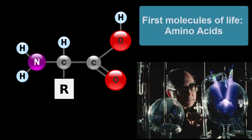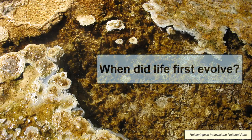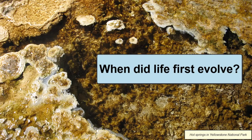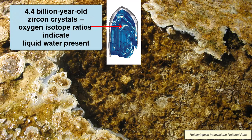Although scientists no longer think the components of his experiment were an exact match to early Earth's environment, Miller's experiment showed scientists that it was possible to create through natural processes the building blocks needed for life. Many scientists around the world are currently studying the synthesis of living cells and creating life in its simplest forms from building blocks that would have been available in early Earth. Oxygen isotope ratios in 4.4 billion year old zircon minerals indicate temperatures on the surface would have been cool enough for liquid water to be stable, so 4.4 billion years represents a possible oldest date for life on Earth.